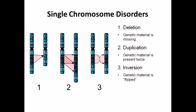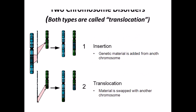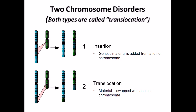However, if we involve another chromosome, there are two more varieties: insertion and translocation. In insertion, one segment of a gene from one chromosome is inserted into a nearby chromosome, giving different lengths. In translocation, a segment of one chromosome is swapped with a segment from a different chromosome.